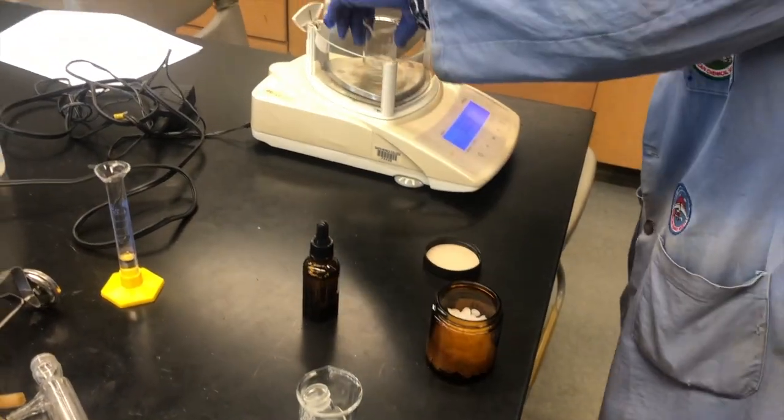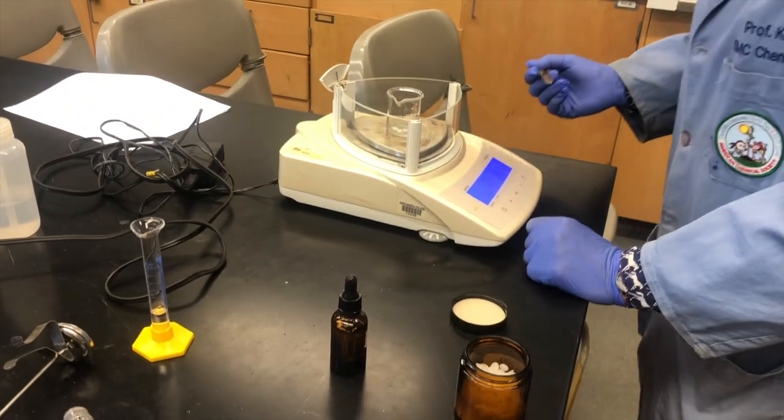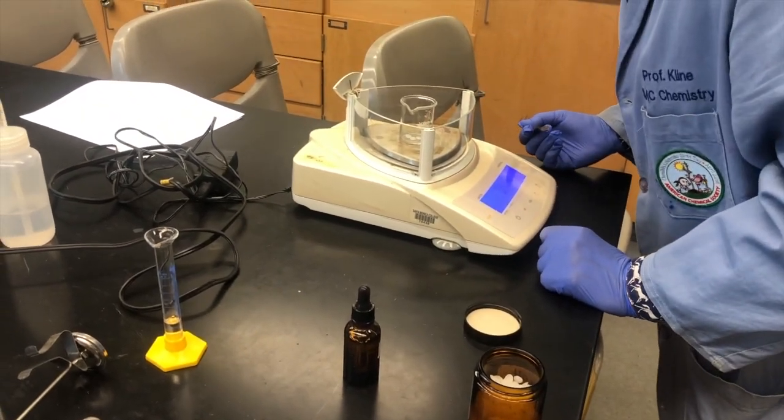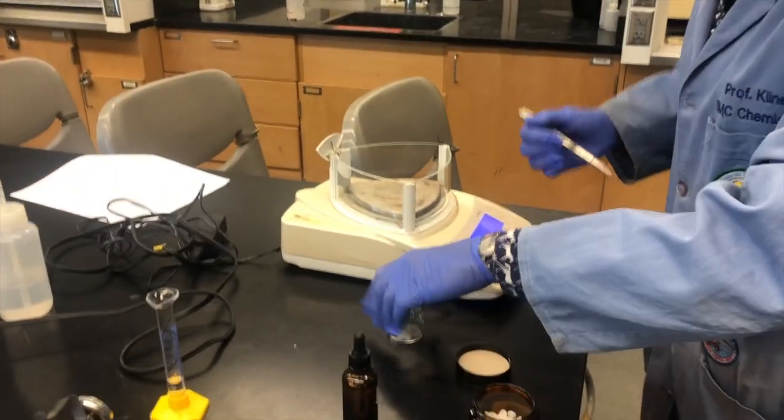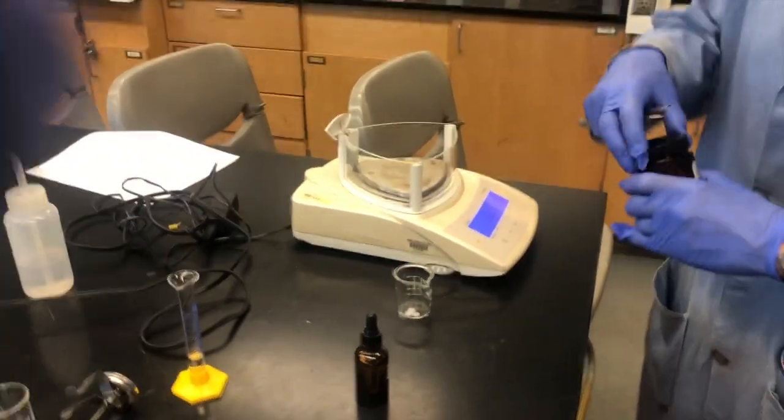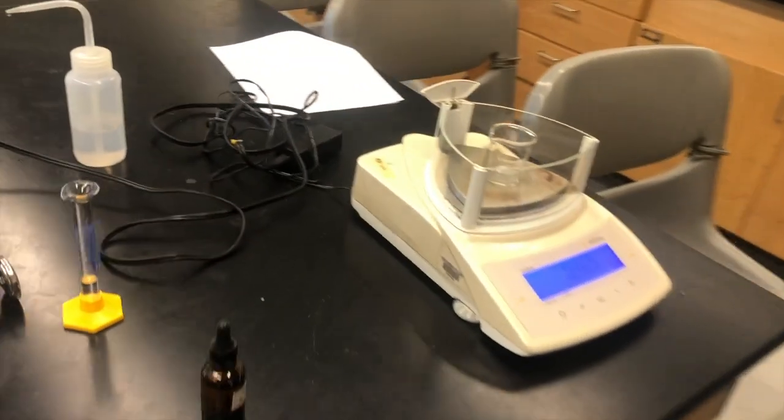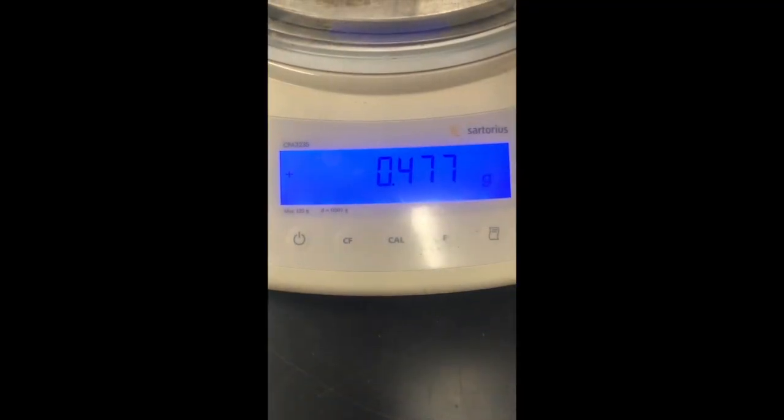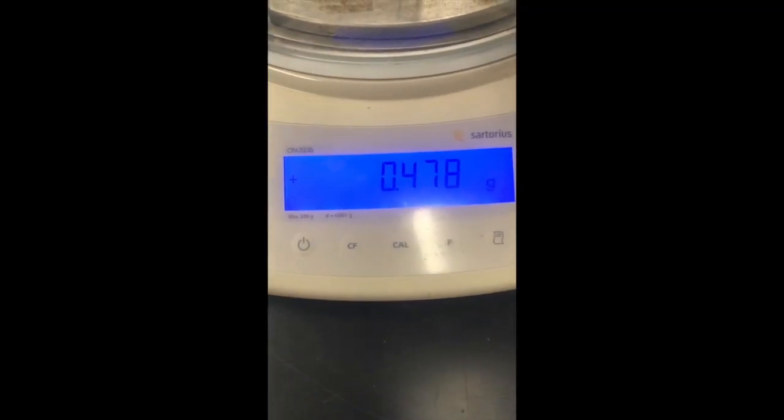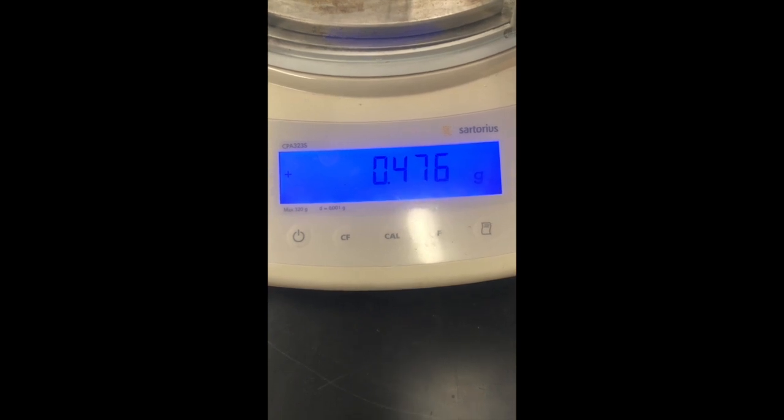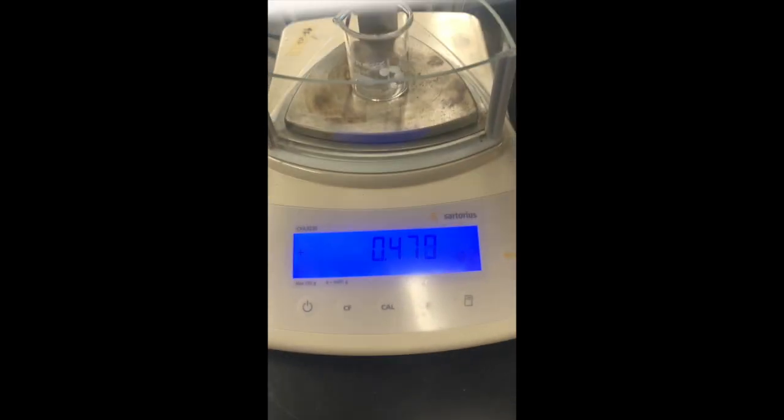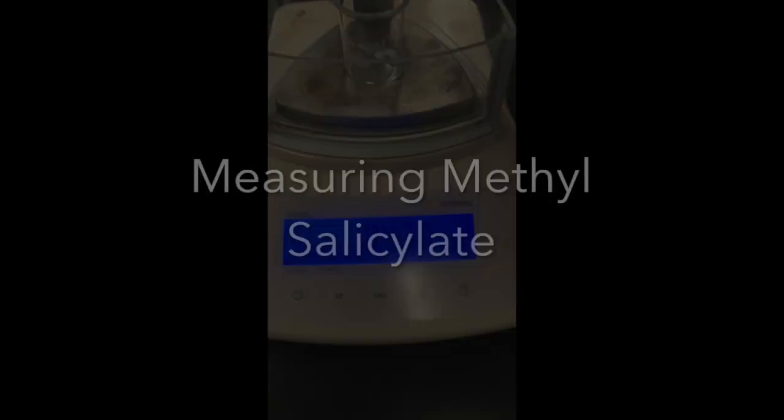We can then take the mass of those pellets. If the mass fluctuates slightly, we take the center value that is seen on the balance. After recording this mass and adding the pellets to the water in the flask, we are ready to measure out the methyl salicylate, which is a thick oily liquid.